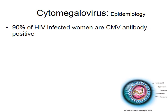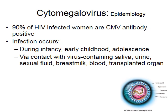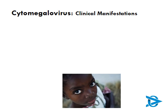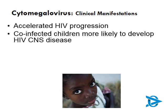Ninety percent of our HIV-infected women are CMV antibody positive. Infection occurs often during infancy, early childhood, or adolescence, and you can get the virus via contact with virus-containing saliva, urine, sexual fluid, breast milk, or blood, and also through transplantation. Perinatal infection is very common in mothers who may be shedding quite a bit of the virus. In a child with HIV who has cytomegalovirus, it's a huge challenge because it can accelerate HIV progression. Children who are co-infected are more likely to develop HIV encephalopathy and central nervous system disease.